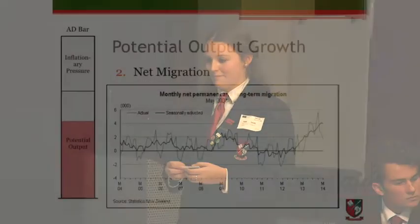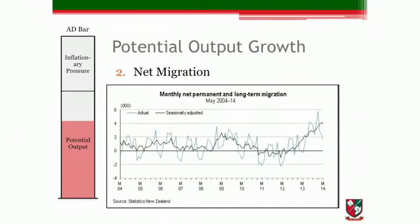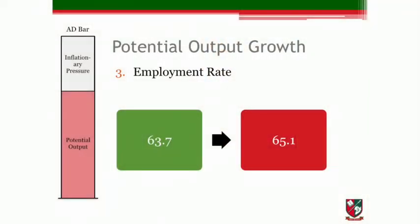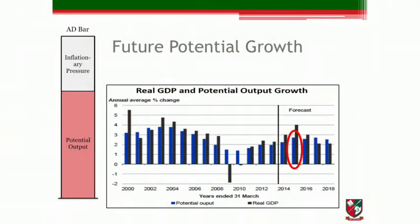The second factor is net migration, which is forecast to rise considerably due to less immigration to Australia. This rise in human resources will mean more can be produced. Thirdly, the employment rate is rising up to 65.1% over the last year. Considering these three factors, we expect potential output to grow by about 3% over the next year. We then expect potential output to settle at about 2.5% as the output gap is closed and rising labour force moderates. I will now hand you over to Scott.